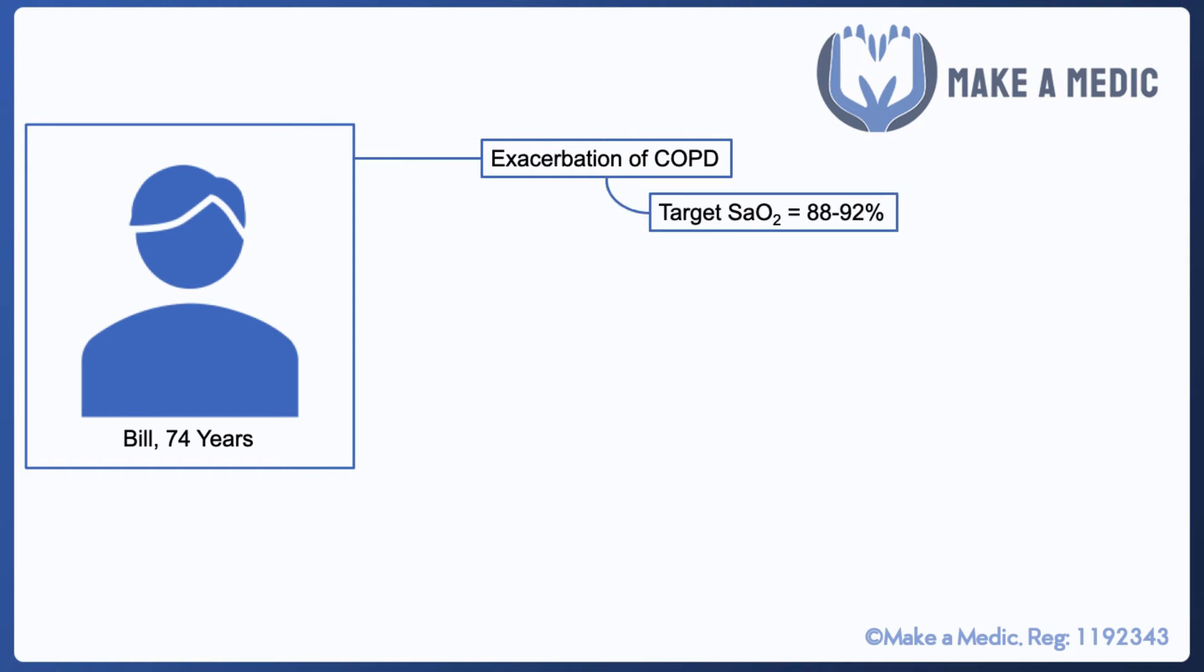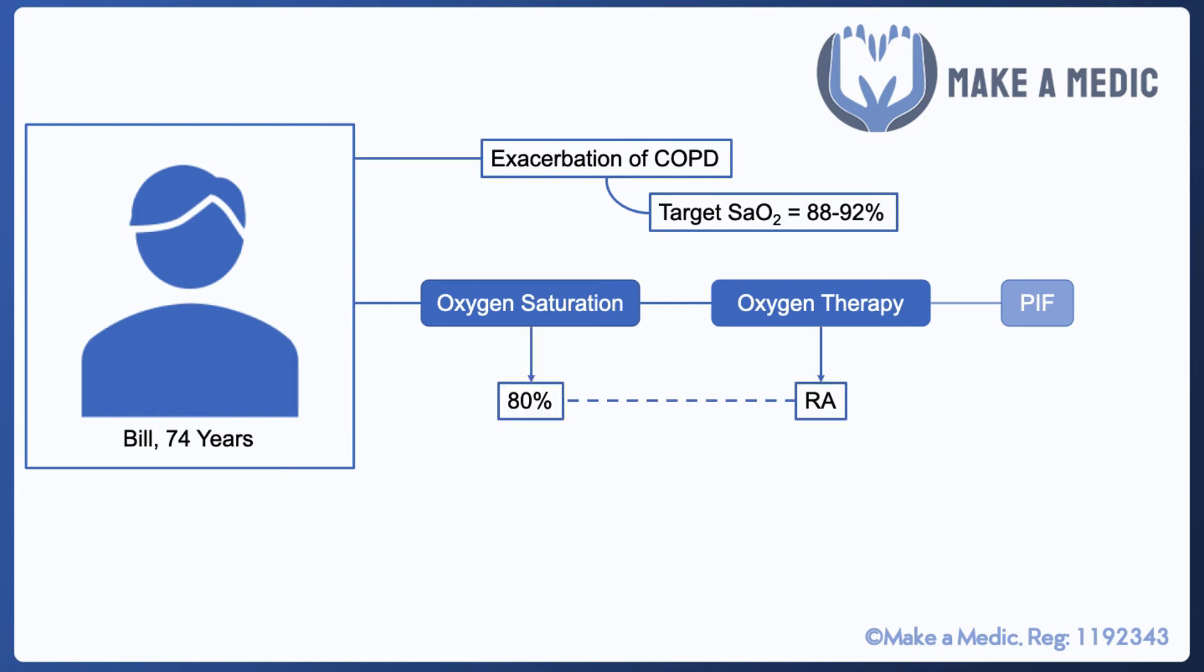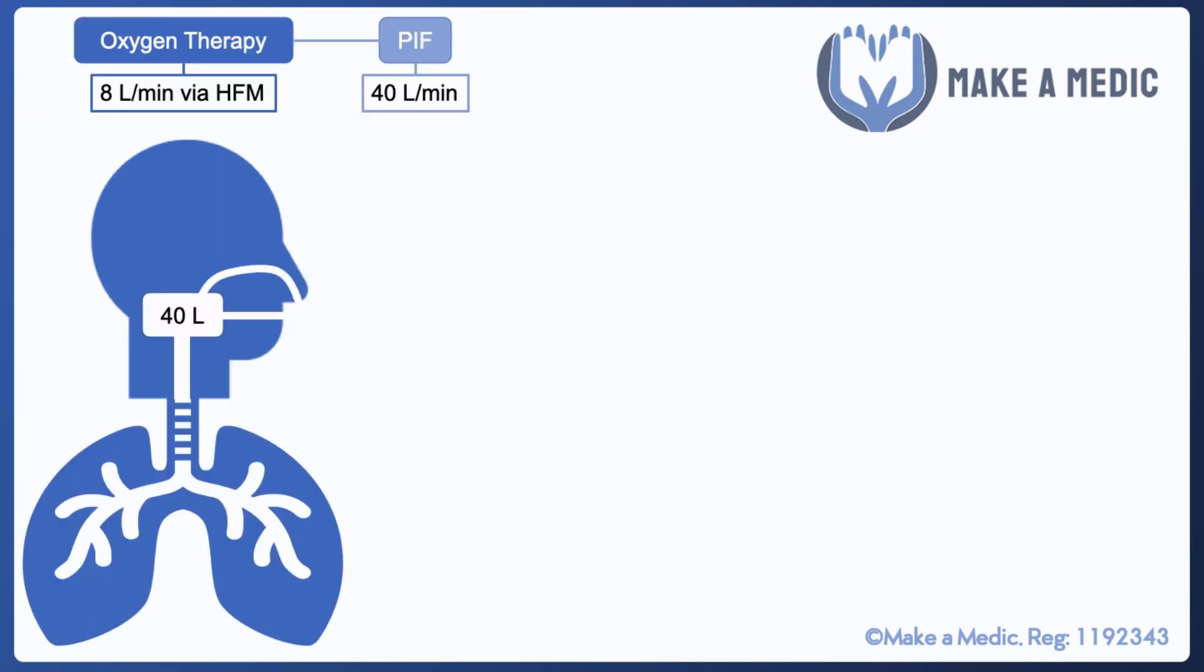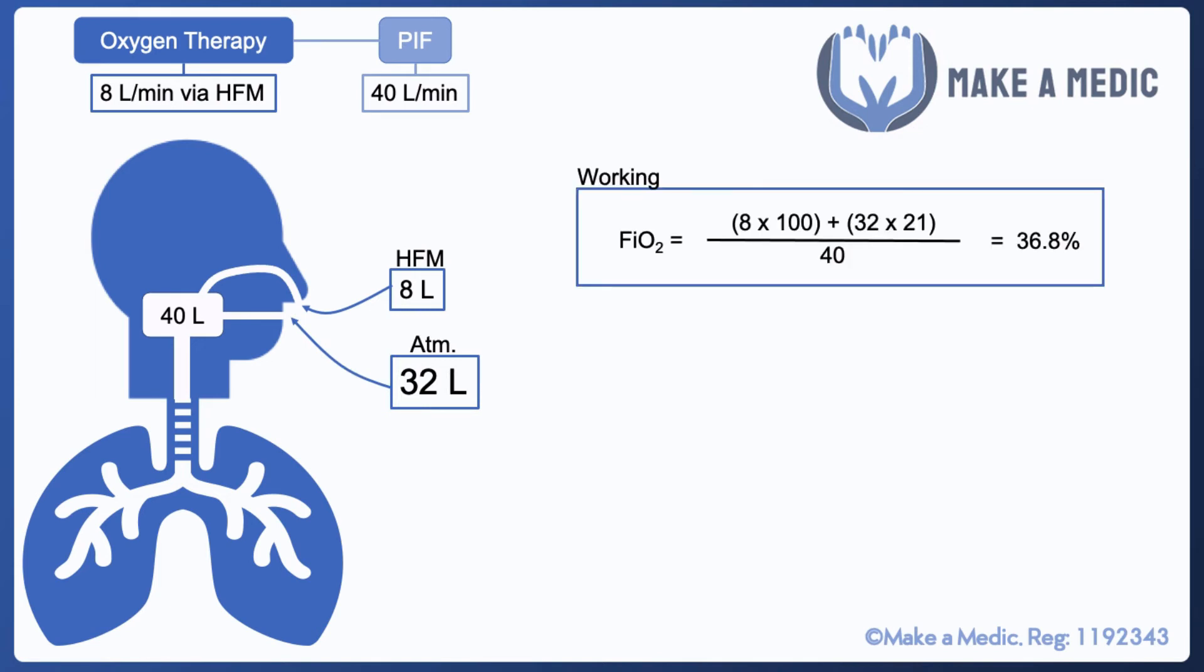Here we have Bill, 74 years old, who has presented with an exacerbation of COPD. He's a CO2 retainer and his target sats are 88 to 92%. On admission, he has an oxygen saturation of 80% on room air and his peak inspiratory flow rate is 40 liters per minute. Straight away, we place him on 8 liters per minute via a Hudson face mask, and it improves his oxygen saturation to 90%. Consequently, he begins to breathe a little bit more easily and his peak inspiratory flow comes down to 30 liters per minute.